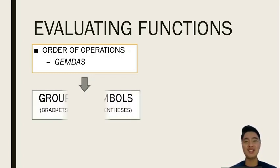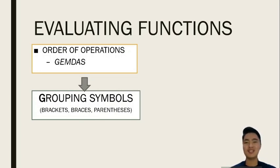And G stands for GROUPING SYMBOLS. What are the grouping symbols? These include brackets, braces, and parentheses.